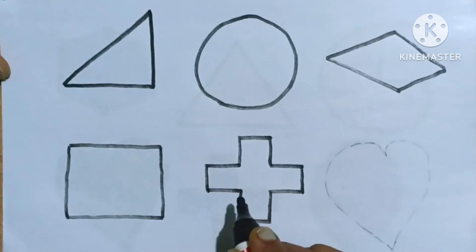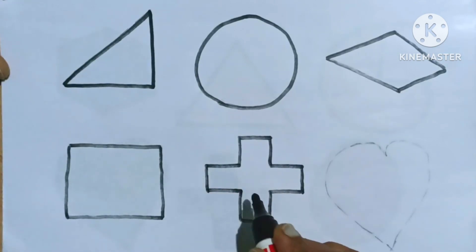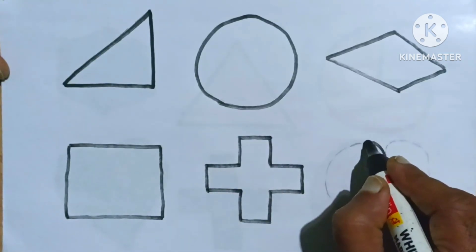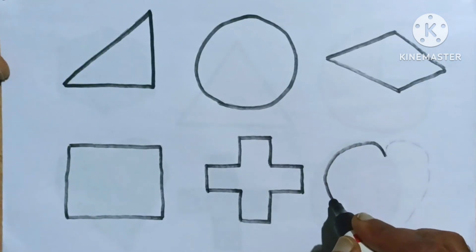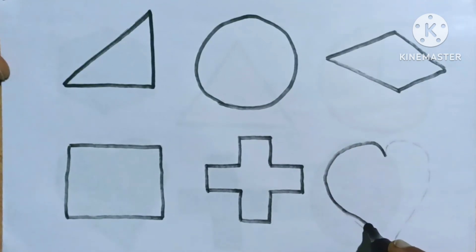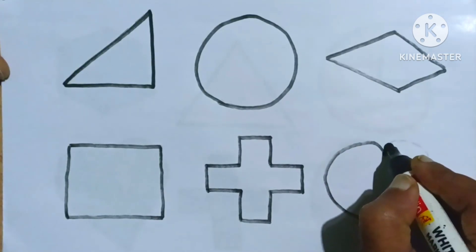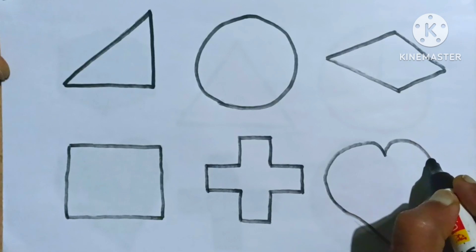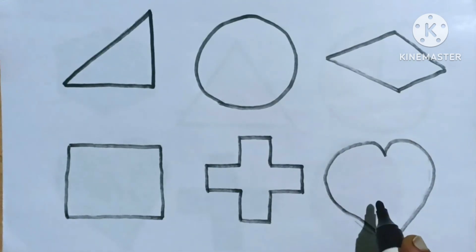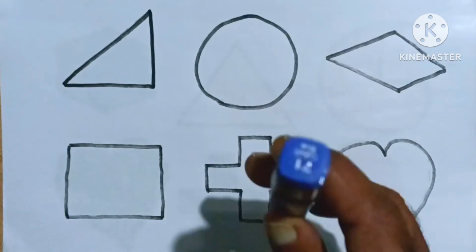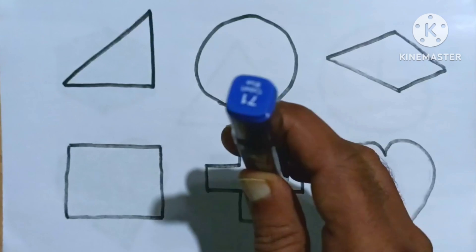Now we draw heart — it's a heart shape, kids. Which shape? Heart. Cobalt blue color.